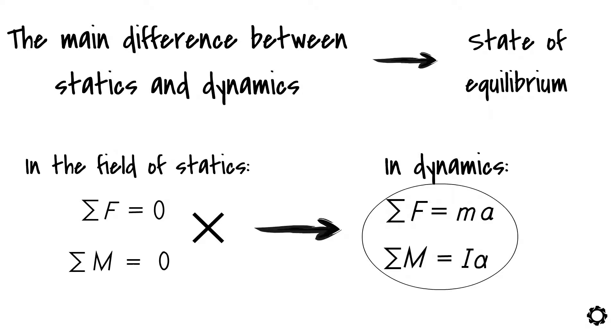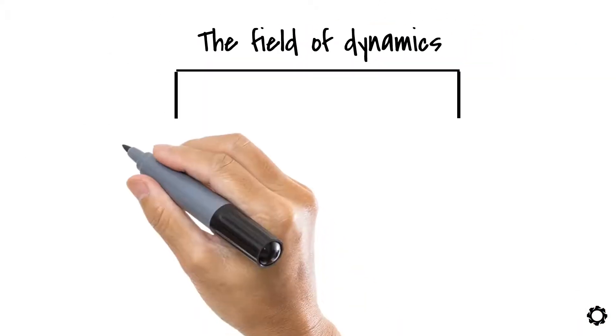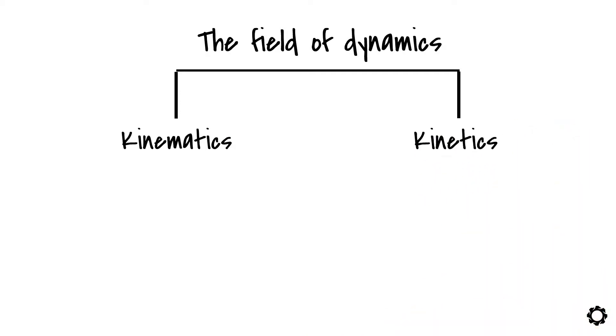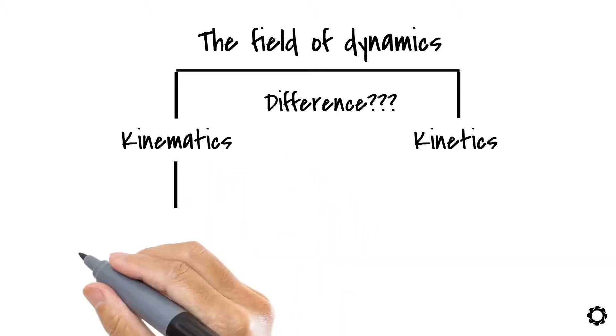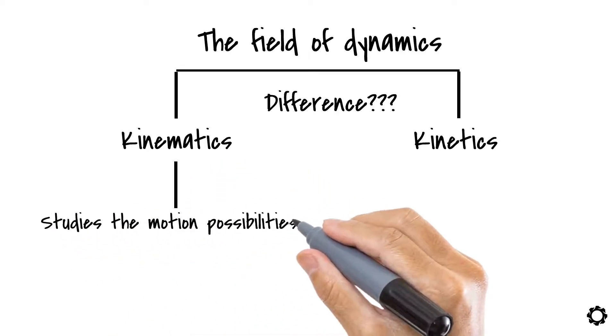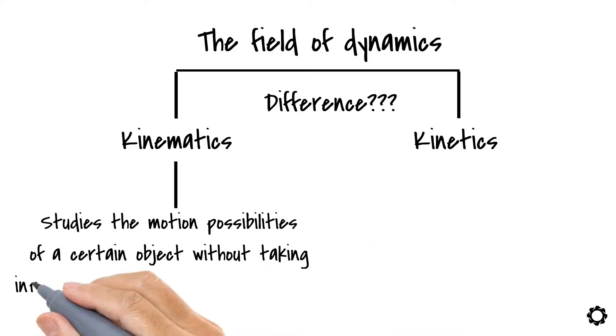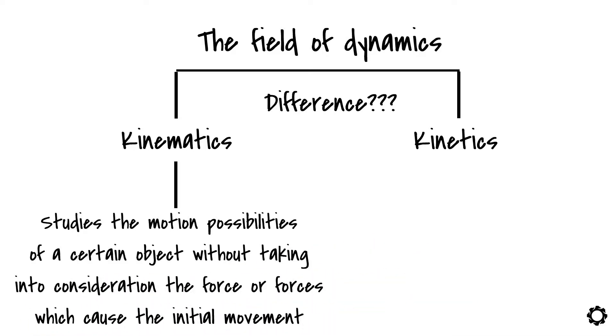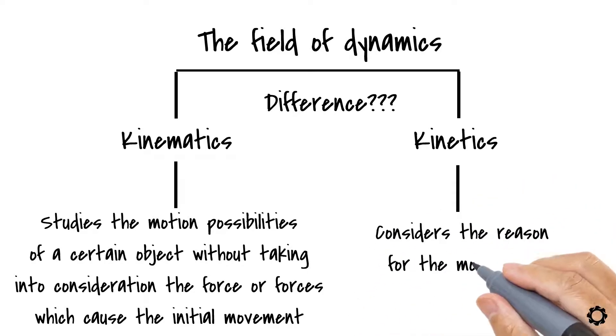If we want, we could divide the field of dynamics into two different branches, which are kinematics and kinetics. What is the difference between these two, you may ask? Well, kinematics is the branch of dynamics which studies the motion possibilities of a certain object without taking into consideration the force or forces which cause the initial movement of the object, whereas kinetics also considers the reason for the movement.